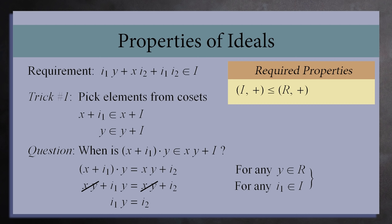That is, for any element y in the ring R, I₁ times y is also an I for any element I₁. We can add this to our list of required properties for any ideal I. We'll just drop the index when adding it to our list of requirements.